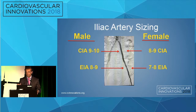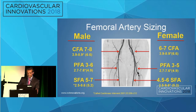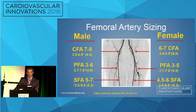The biggest difference I see is between males and females, and I always change my sizing based on that. In a male, the common iliac artery is usually 9 to 10 millimeters, external iliac 8 to 9. Females are usually 1 millimeter less — common iliac 8 to 9, external 7 to 8. For the femoral artery in males: common femoral 7 to 8 millimeters, profunda 3 to 6, superficial femoral artery 5 to 7. In females: common femoral 6 to 7, profunda 3 to 5, superficial femoral 4.5 to 6.